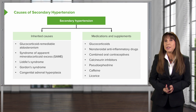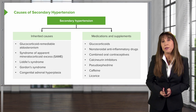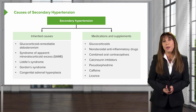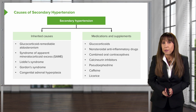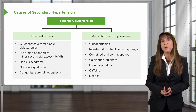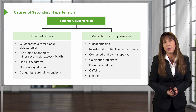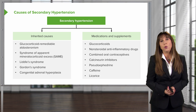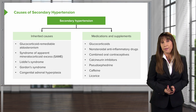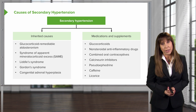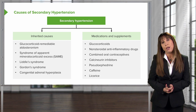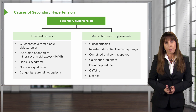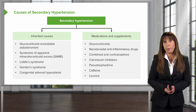There are also medications and supplements that can cause hypertension. These include glucocorticoids, nonsteroidal anti-inflammatory drugs, combined oral contraceptives, calcineurin inhibitors — medications given to organ transplant recipients — pseudoephedrine, caffeine, and licorice. When I mention licorice, I'm referring to black licorice, typically not the kind found in the United States but more commonly abroad.